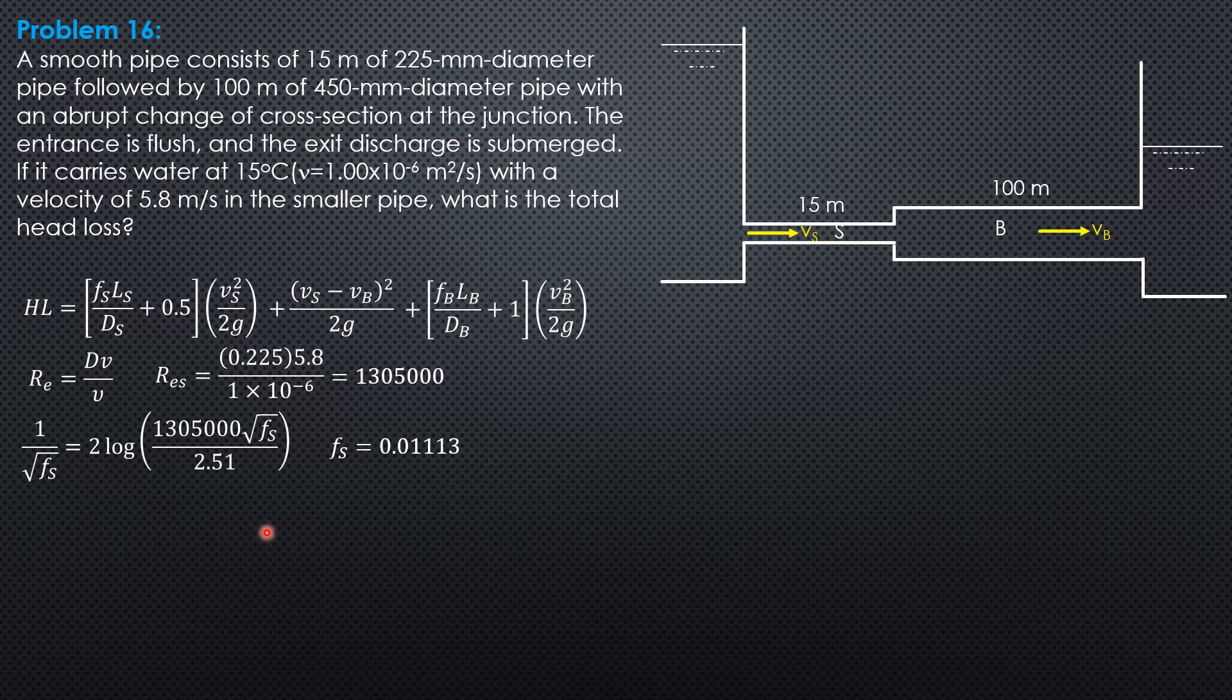Then, for the velocity in the bigger pipe, continuity equation, 225 squared times 5.8 equals 450 squared times velocity in the bigger pipe. So mean velocity in the bigger pipe is 1.45 meters per second.